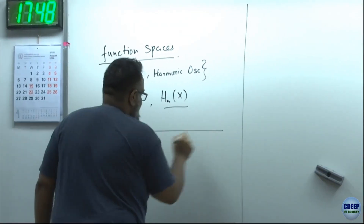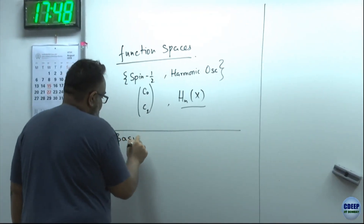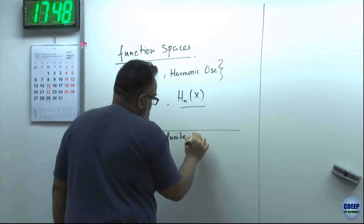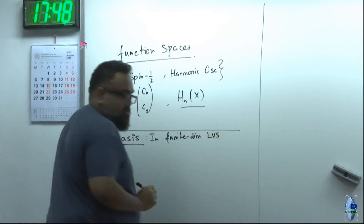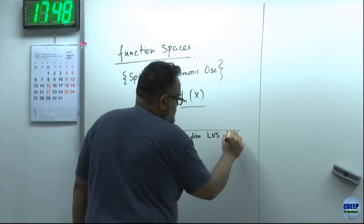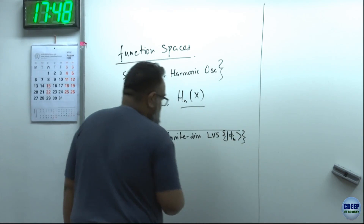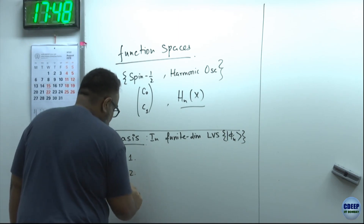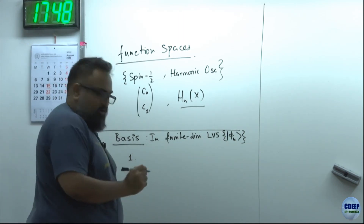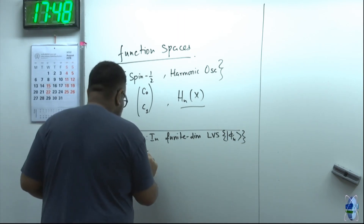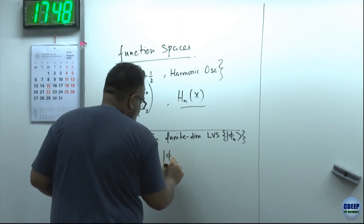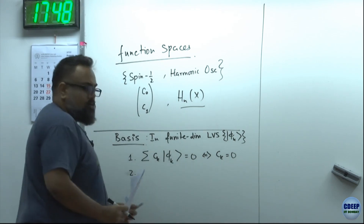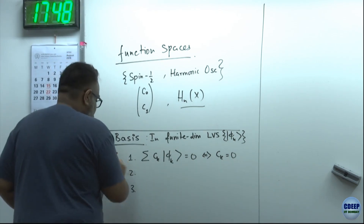To begin the discussion, let me go back to the definition of basis in finite dimensions, linear vector spaces. If I said I had a basis set phi_k, then there are three things to write down - two underlying principles. First: if sum over c_k phi_k equals zero, then it implies c_k equals zero. This is linear independence.